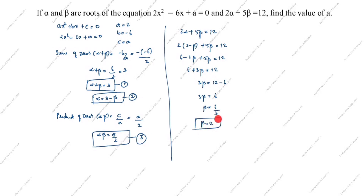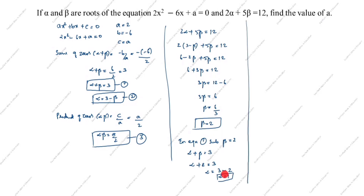Now we got beta. How do we find alpha? In equation 1, we substitute beta equals 2. Alpha plus beta equals 3, so alpha plus 2 equals 3. Therefore alpha equals 3 minus 2, which gives alpha equals 1. We have now found both alpha and beta.